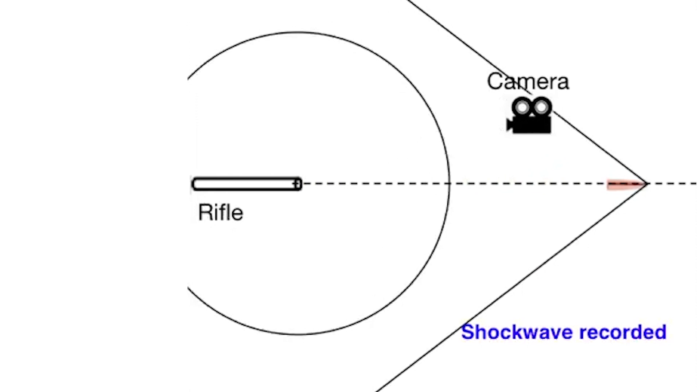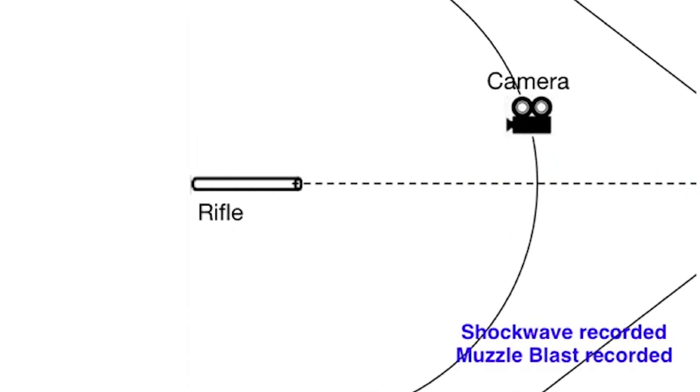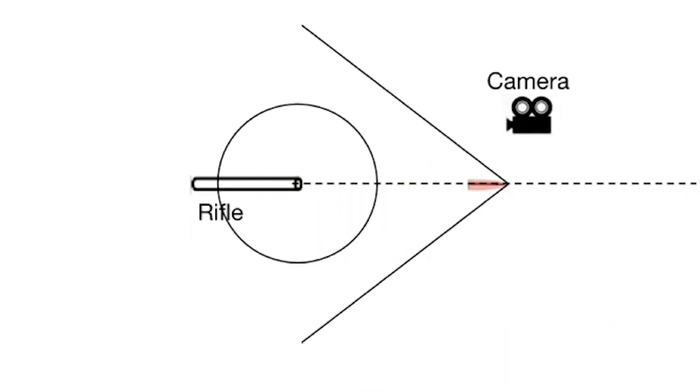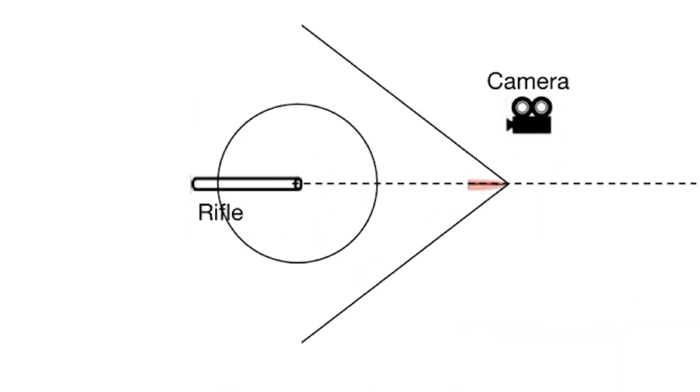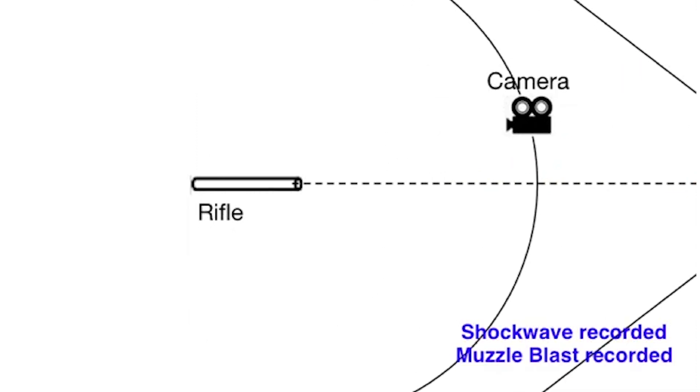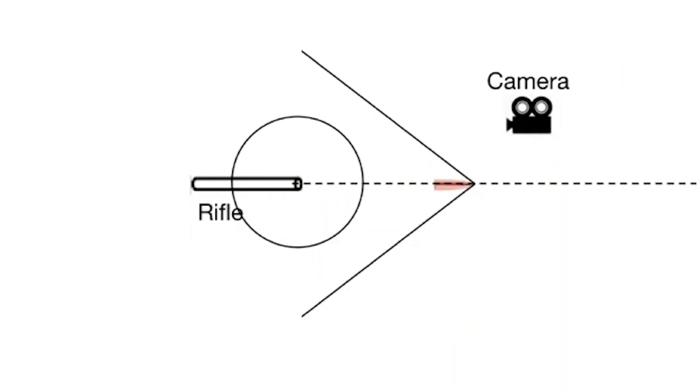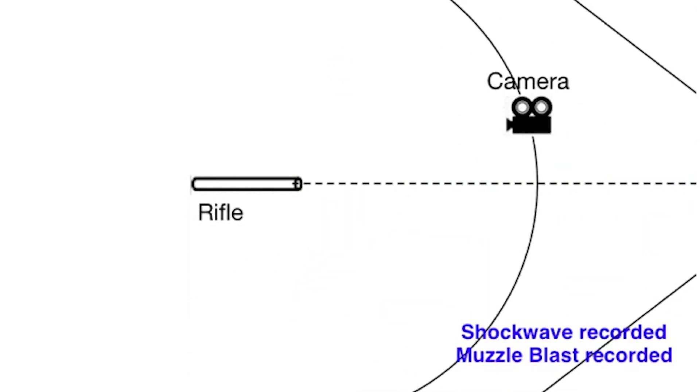But then if you're within 30 degrees of the trajectory of the bullet, the bullet travels faster than sound. So it'll get to the vicinity of your ear faster than the gunshot muzzle sound. And that sound is sometimes known as the crack.